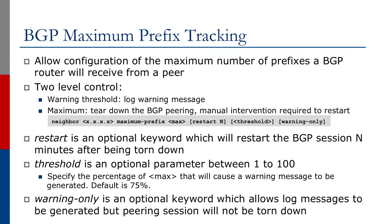We're now going to talk about BGP maximum prefix tracking. One should allow configuration of the maximum number of prefixes a BGP router will receive from a peer. This feature allows a router to bring down a peer when the number of received prefixes from that peer exceeds the configured maximum prefix limit. This can be implemented using the command shown on the screen. One can implement two levels of control: using the threshold value, which will generate a warning message when the percentage of max prefixes is reached, and the max value, which will actually tear down the BGP peering when that number is reached. Manual intervention is required to restart the BGP peer.